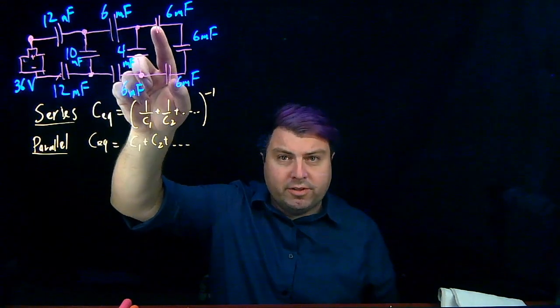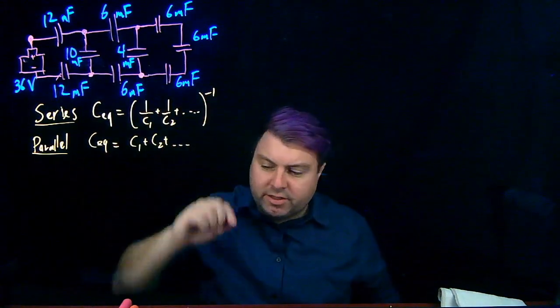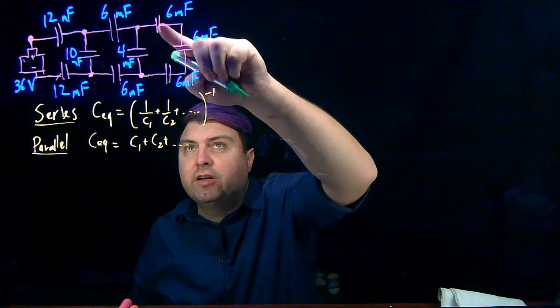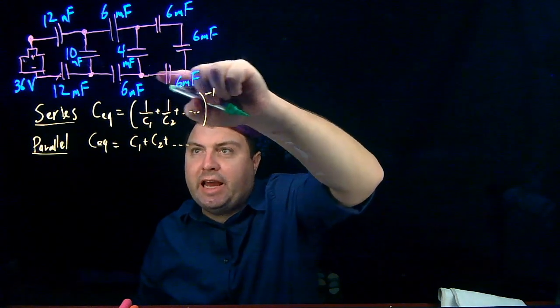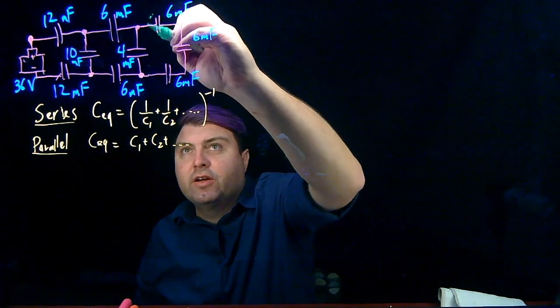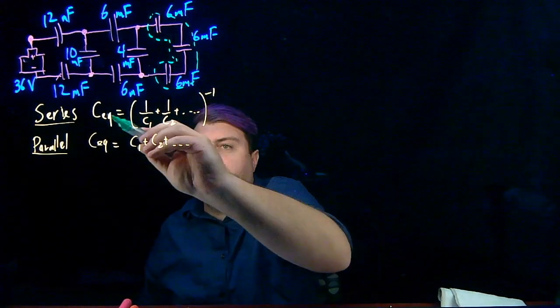But also, if I go through this 12, I can go through this 6, it's not one or the other, so they're not in parallel. We can't do any rules with this 12 and 6 right now, but we can take a look over here. If I go through this 6, I have to go through this 6 and then this 6. So these three are in series.